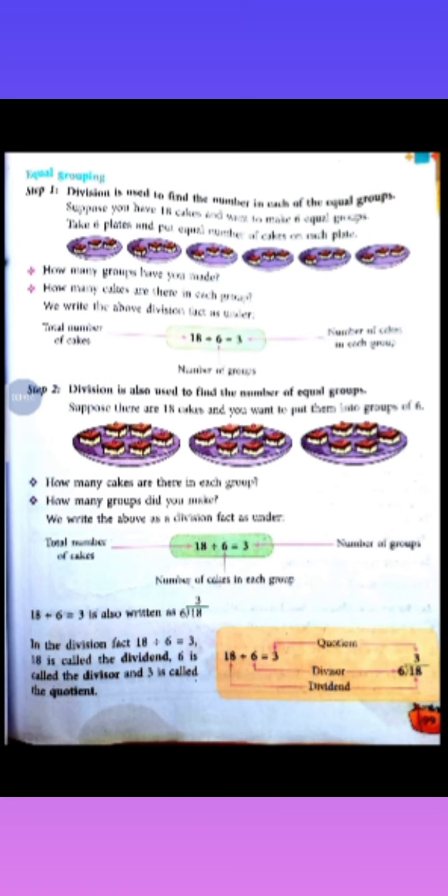Division is used to find the number in each of the equal groups. This is the same thing — we can distribute into equal groups. Suppose you have 18 cakes and want to make 6 equal groups. Take 6 plates and put an equal number of cakes on each plate.